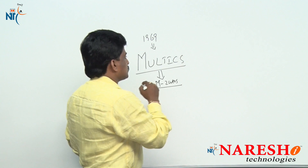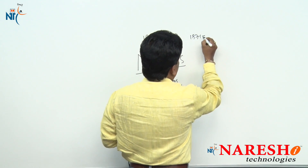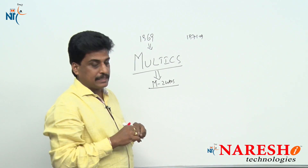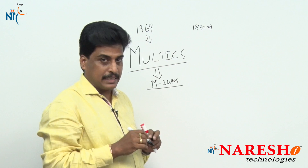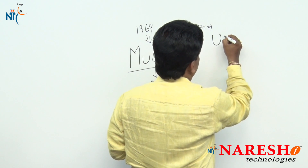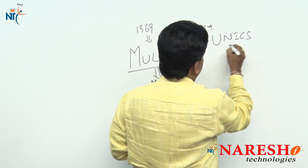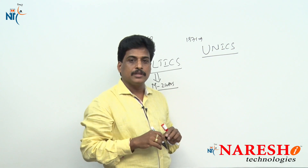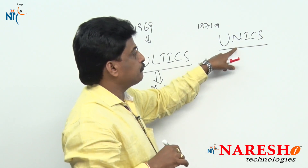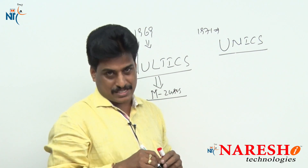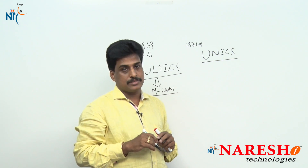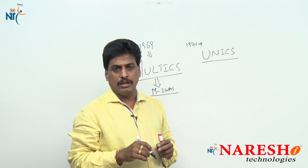In 1971, to recover the drawbacks of Multics, Bell Laboratories re-implemented it. The new project name is called UNICS — Uniplexed Information Computing Systems — developed on assembly language. Assembly language's alias name is symbolic language, generally called a low-level language.